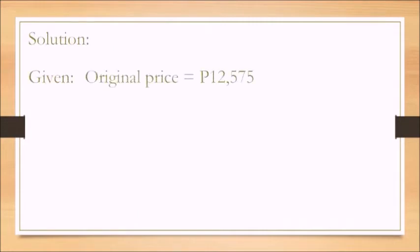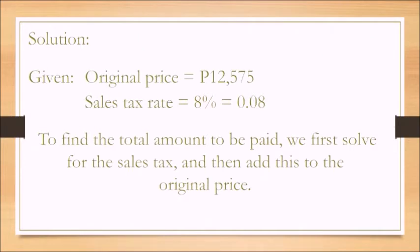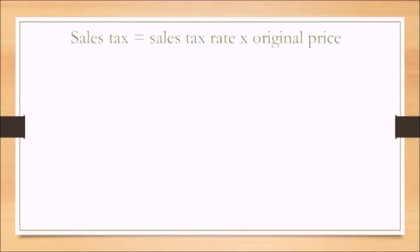Solution: given is the original price which is $12,575 and sales tax rate equals 8% or 0.08. To find the total amount to be paid, first solve for the sales tax and then add this to the original price. Sales tax equals sales tax rate times the original price. So 0.08 times $12,575. That is $1,006.